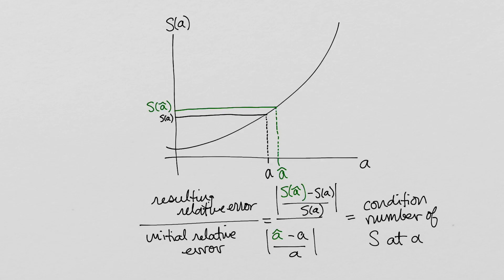The condition number of a function is another function with the same domain. It measures the factor by which it magnifies or shrinks relative error near each input.